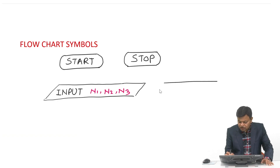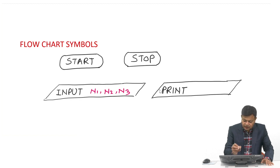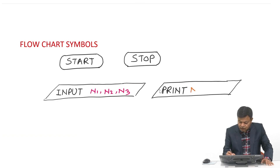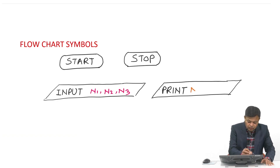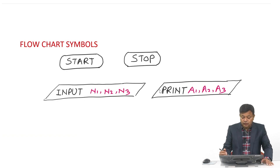Whenever we want to display something to the outside world — whenever the programmer wants to show some result — we write 'Print' followed by the list of arguments whose values you want to display. For example, if arguments are a1, a2, a3, then the values of a1, a2, and a3 will be printed or displayed.